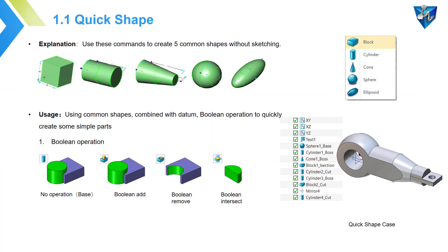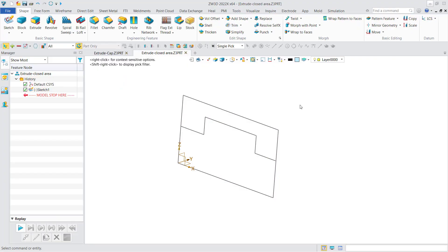The first topic is about the quick shape. In ZW3D, you can create five common shapes without sketching. And you can do boolean operations while you are creating the shapes, like boolean add, boolean remove, boolean intersect, etc. Now let's move over to ZW3D to see more about it.